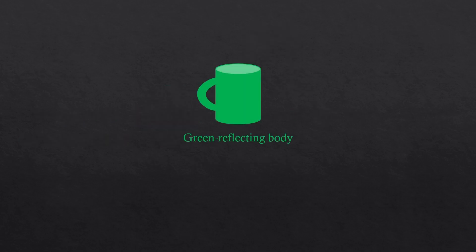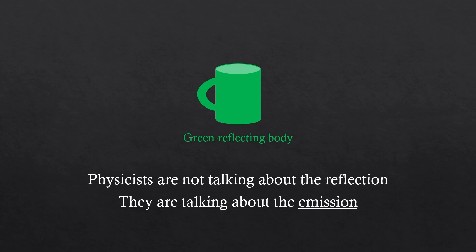What I'm trying to say is, physicists aren't talking about the reflection. They are talking about the emission. The reason why you couldn't understand that the sun is a black body is because you are thinking about the reflection. Then it is of course confusing.